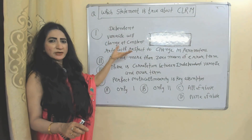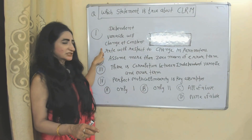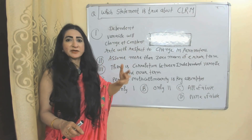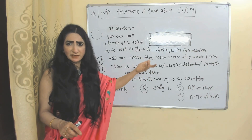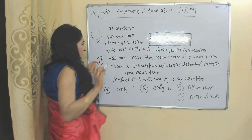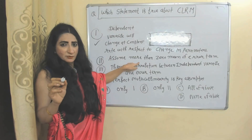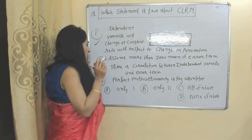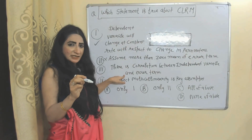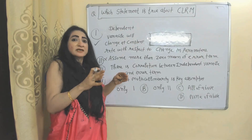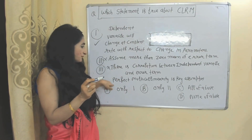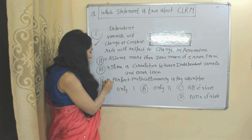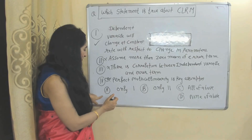MCQ Question 6: Which statement is true about the classical linear regression model? (A) Dependent variable changes at a constant rate with respect to change in parameters — correct, since the dependent variable is a linear function. (B) Assumes more than zero mean of error term — false, it assumes zero mean. (C) There is correlation between independent variable and error term — false, the model assumes no such correlation. (D) Perfect multicollinearity is a key assumption — absolutely wrong, the model assumes no perfect multicollinearity. The correct answer is A.